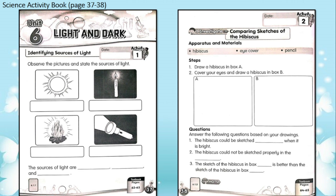For each of the four pictures, decide whether the source of light is the sun, a lamp, or fire. You may refer to your textbook on pages 62 and 63. Then write down the three sources of light in the spaces provided — starting with the sun, then the second and third ones. Write them neatly.